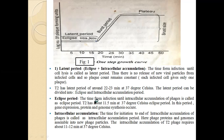The time from infection until intracellular accumulation of phage is called the eclipse period. T2 phage has an eclipse period of about 11.5 minutes at 37 degrees Celsius. During this period, gene expression, protein synthesis, and genome synthesis occur.